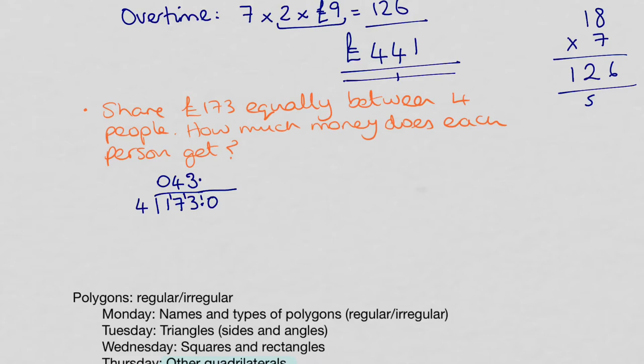But remember that 173 is exactly the same as 173.0. So now, remember to keep your points in line. 4 into 10 goes twice. Remainder 2. So we're going to need another 0. And then 4 into 20 goes 5 times. So the answer is right there at the top. So we're going to have £43.25.